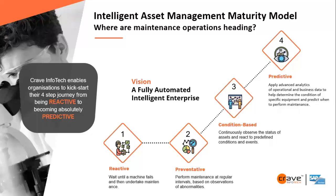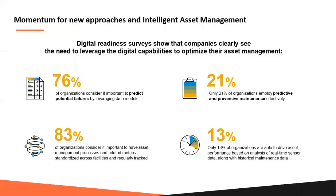When we talk about the entire end-to-end intelligent asset management maturity model, these are the stages. Reactive is the first stage, and most organizations fall in this phase. From there, the journey starts with preventive, condition-based, and predictive maintenance. With intelligent systems in place through SAP and Crave innovative solutions, we have to walk through this journey. Survey data shows 76% of organizations consider it important to predict potential failure by leveraging data models, and only 21% of organizations employ predictive and preventive maintenance. Still a large number of organizations struggle to have the right consulting, right system, and right automation in place.